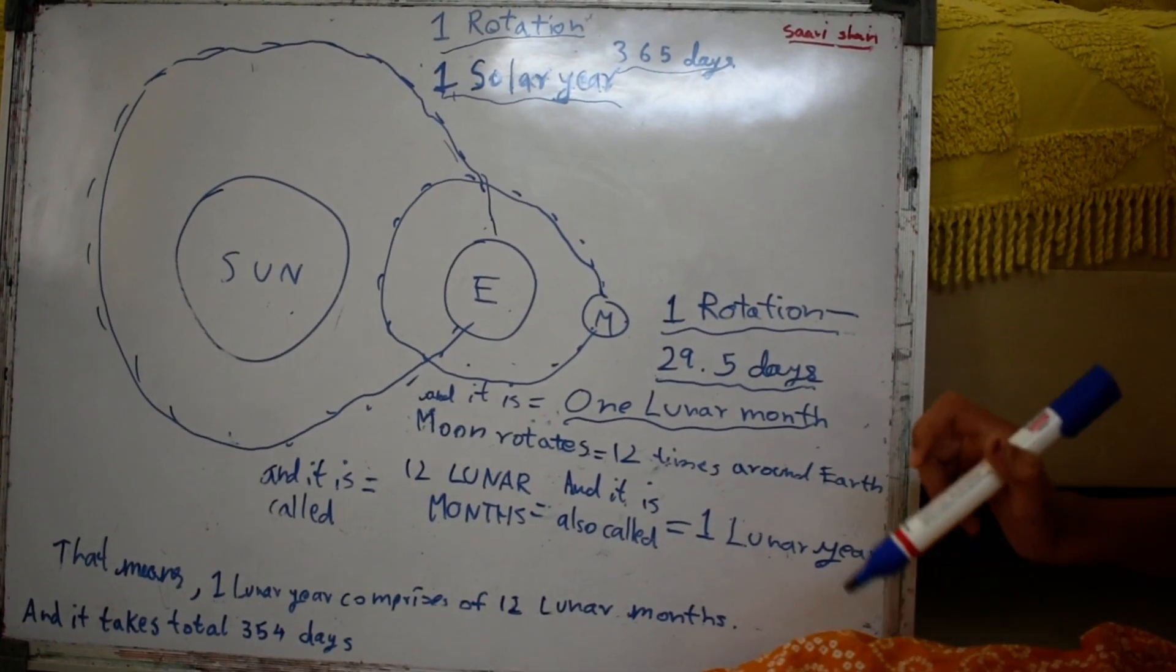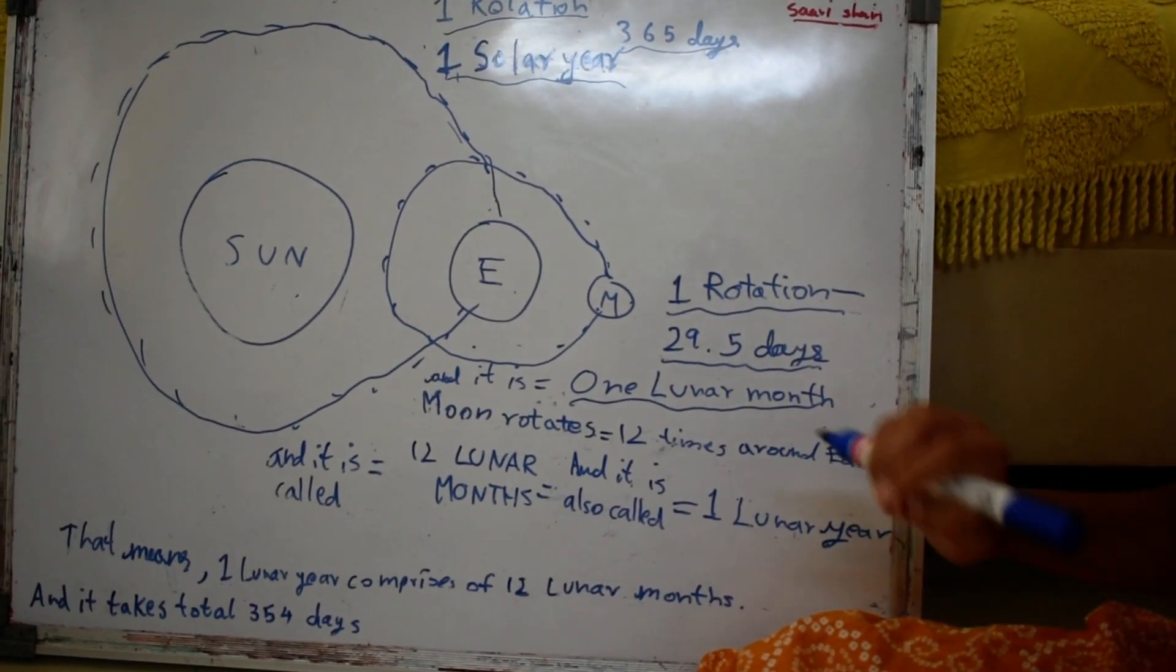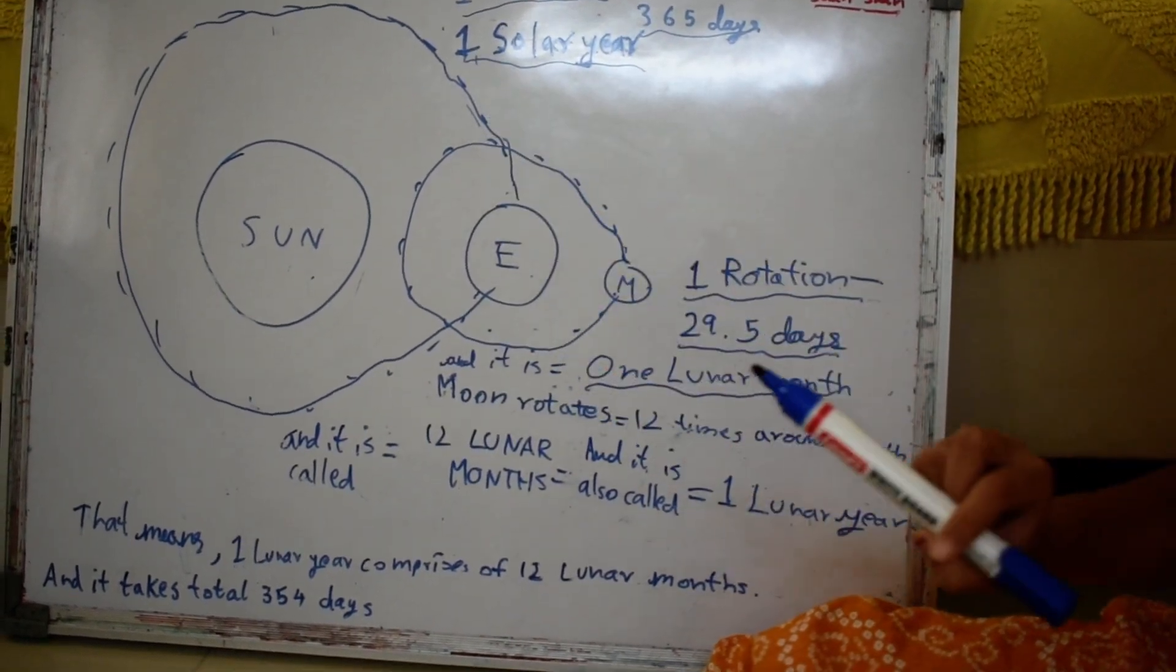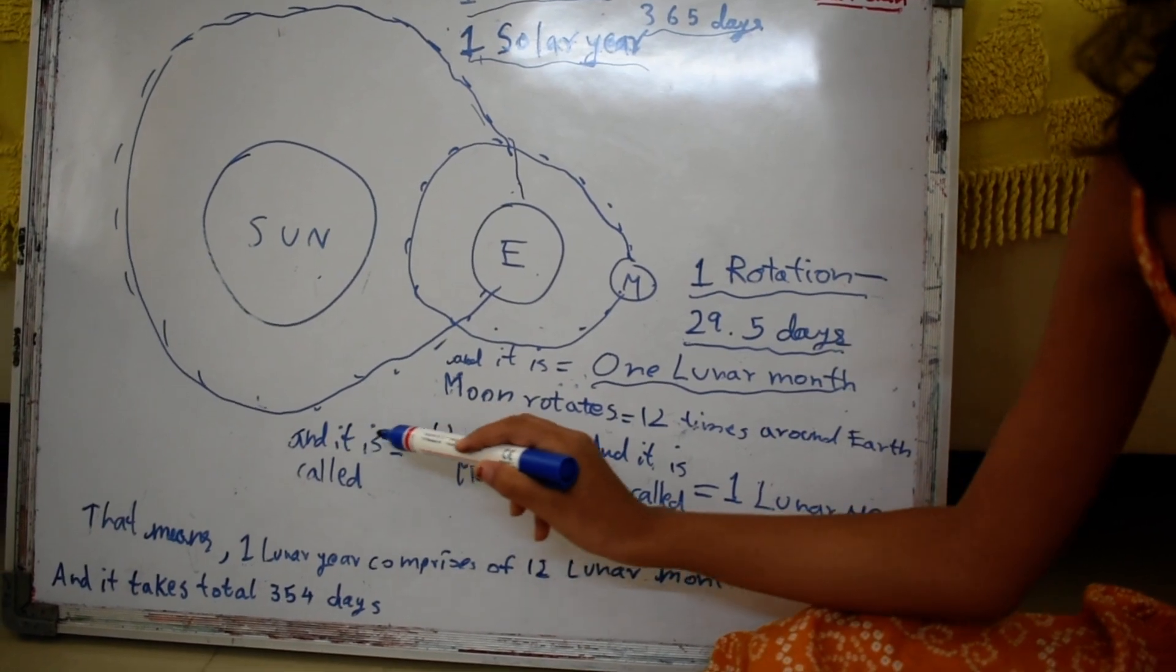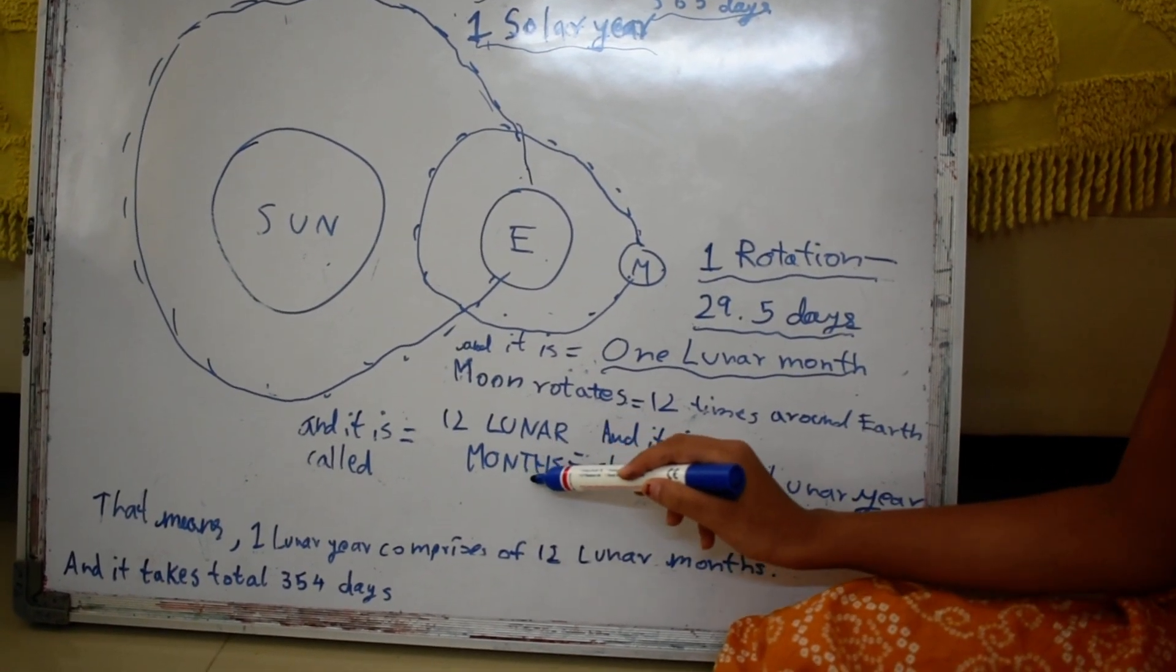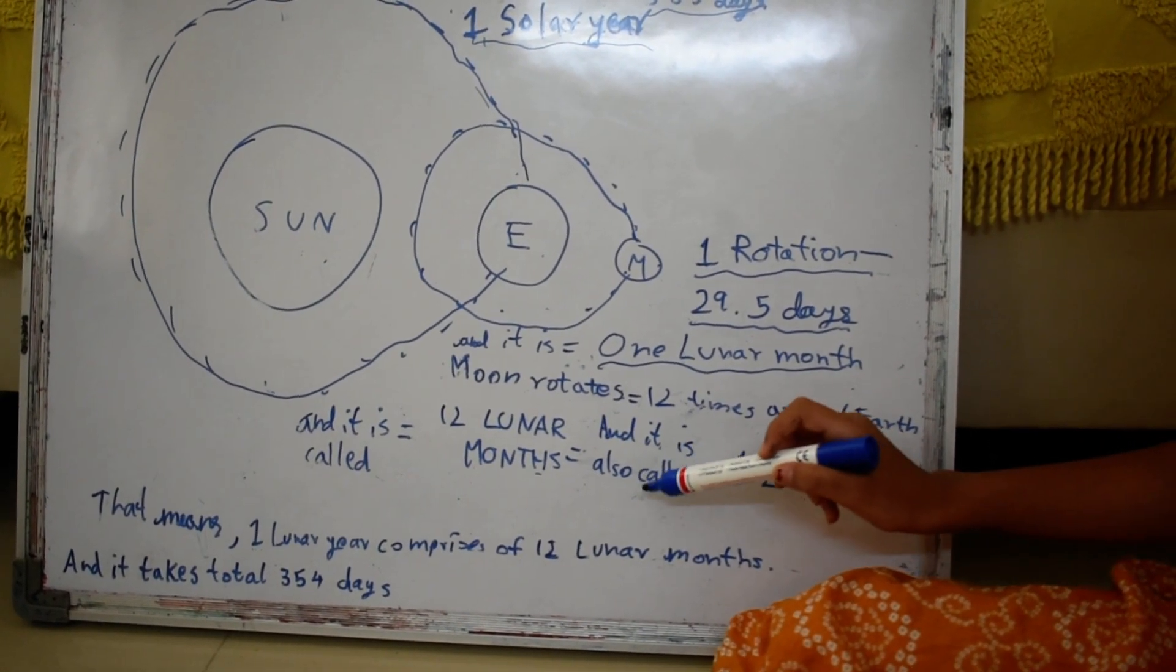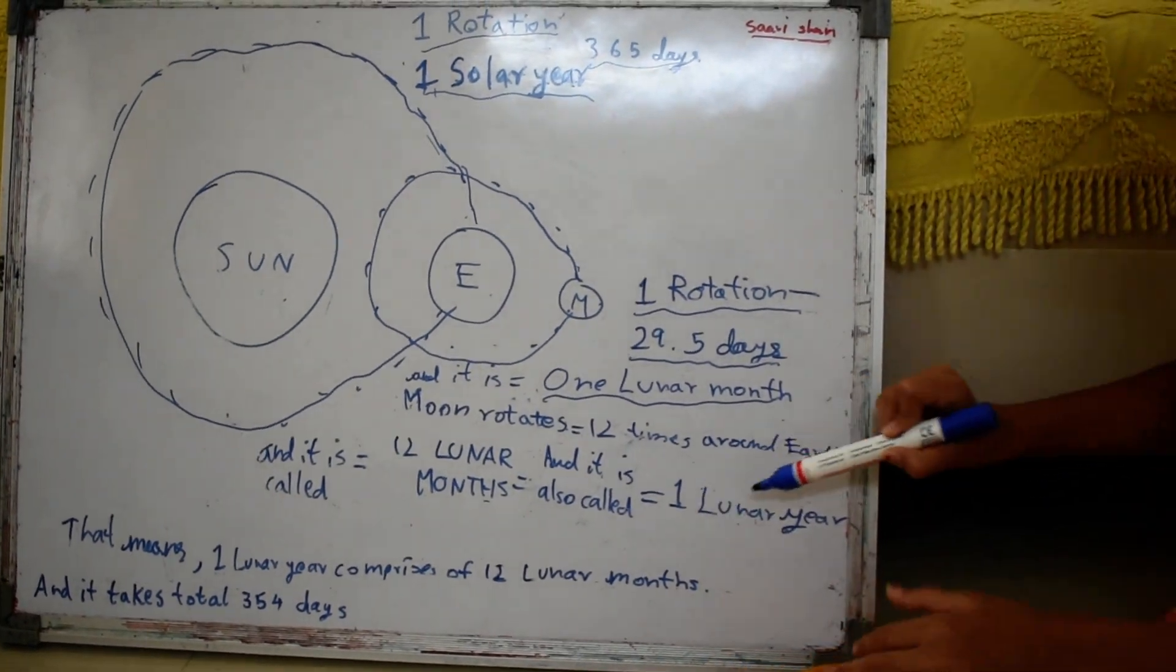The moon rotates 12 times around the earth. And it is called 12 lunar months. And it is also called one lunar year.